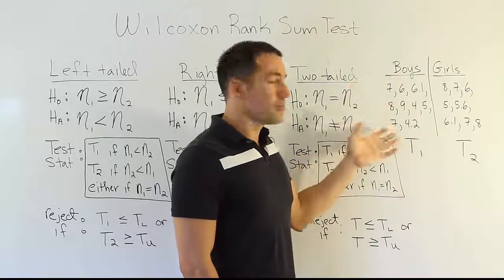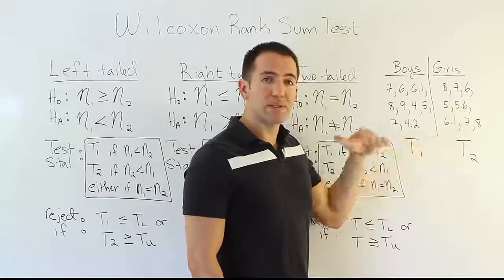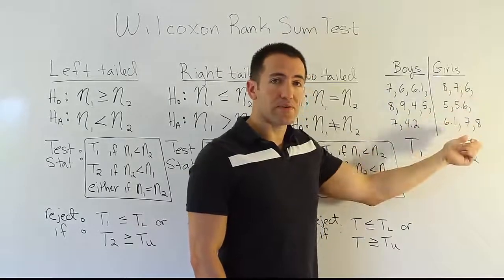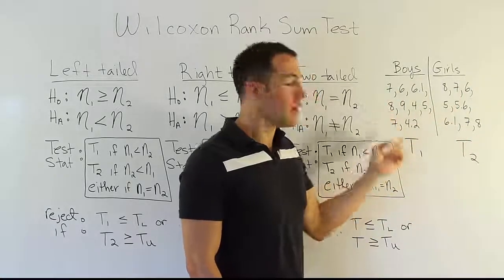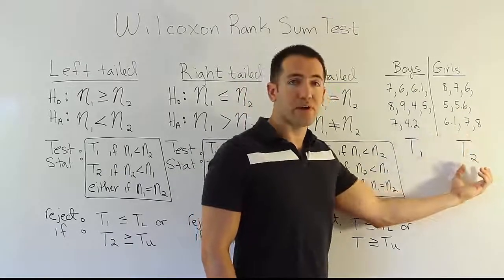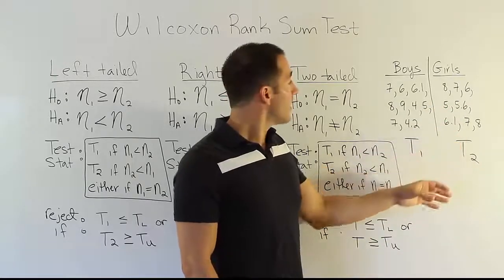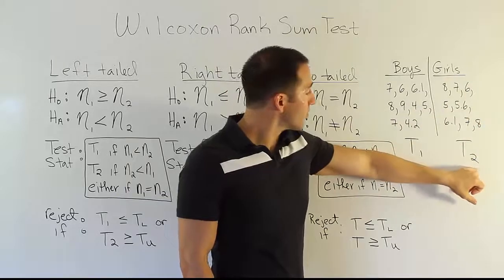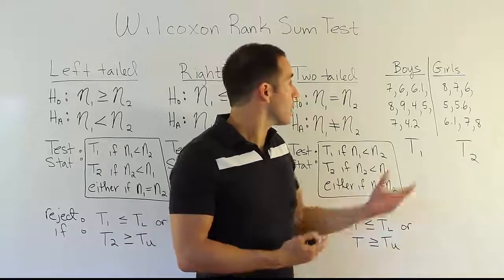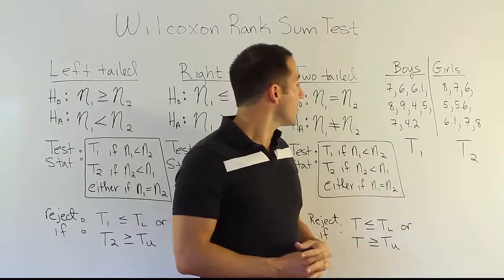The logic of the test is that if the boys ended up jumping much further than the girls, then their jump distances would be the big numbers and the girls' jump distances would be the small numbers. When you rank them, all the big ranks would end up in the boys' category and all the little ranks in the girls' category. So when you total up the ranks for the two separate groups, the total for the boys would be much higher than the total for the girls. If the girls jumped further, then they would have the big ranks and their rank total would be bigger than the boys'. We're going to see if that difference is significant. If it is, we can say that the boys seem to jump farther than the girls, or vice versa. That's the logic of the test.